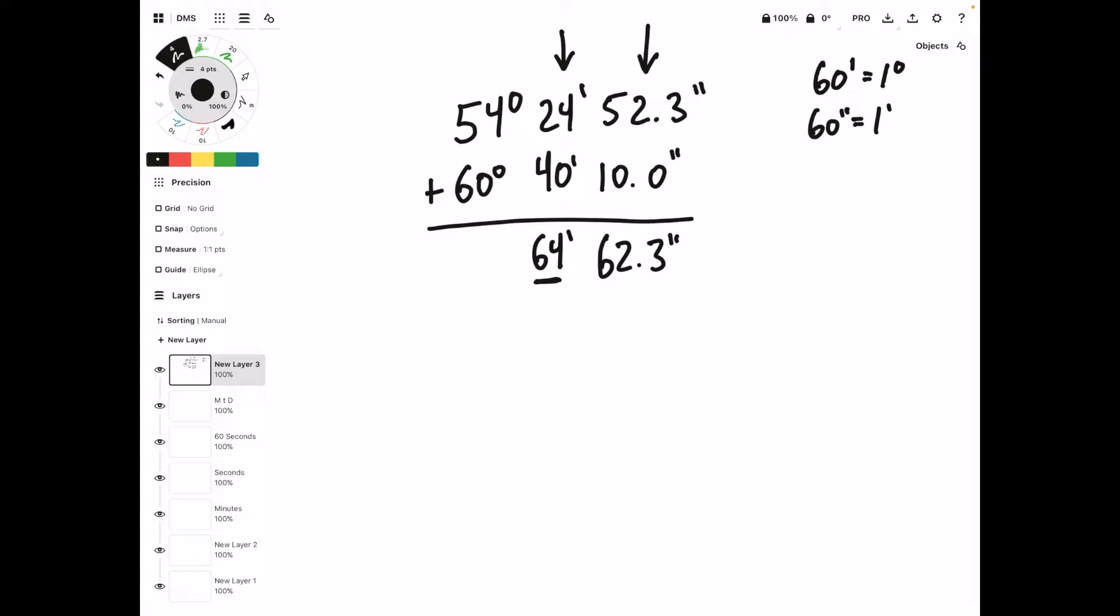This is again greater than 60, so we'll need to adjust that at the end. Finally, we'll move to the degrees column and add 54 plus 60 to get 114 degrees.